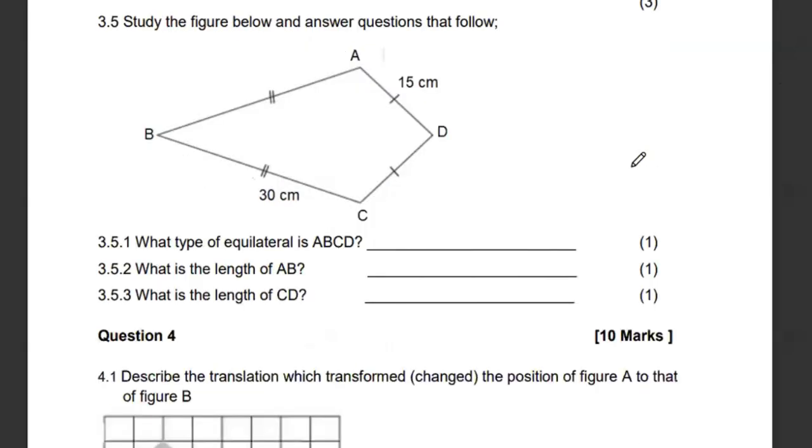Then 3.5, they're telling us to study a figure below and answer the questions that follow. What shape is this? If this marking is the same as that, this is the same as that, meaning this is a kite. We know that a kite has two sides that are equal. So what type of quadrilateral is this? It's a kite. And what is the length of AB? AB is the same as this, meaning it is 30 centimeters. Then what is the length of CD? CD is going to be 15 centimeters.